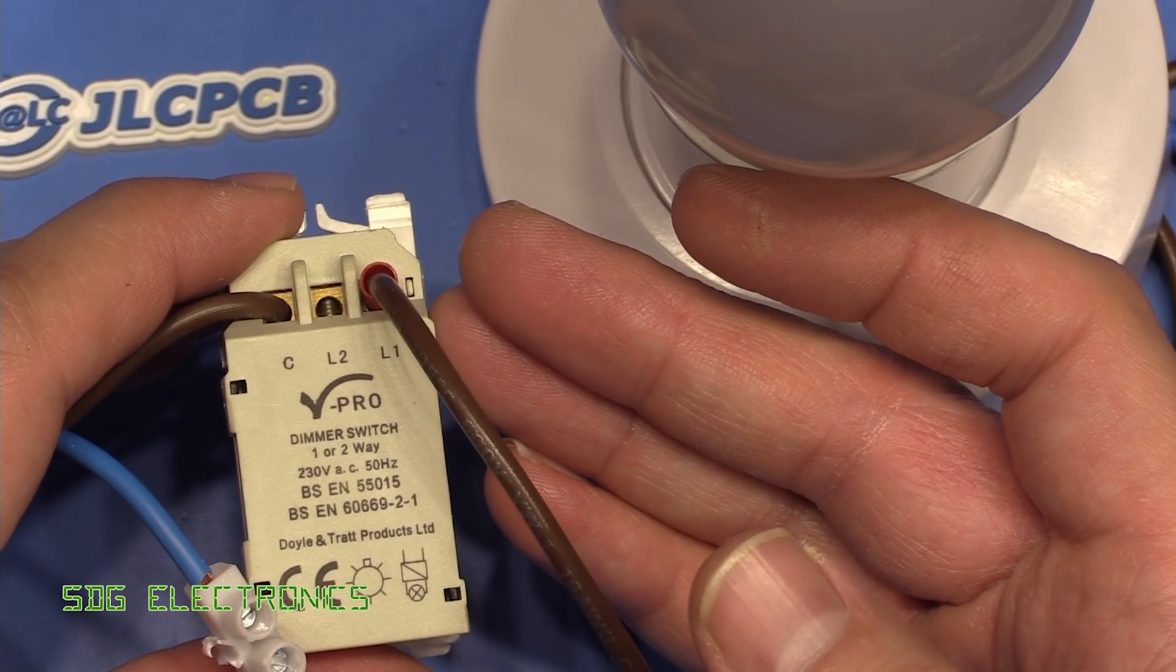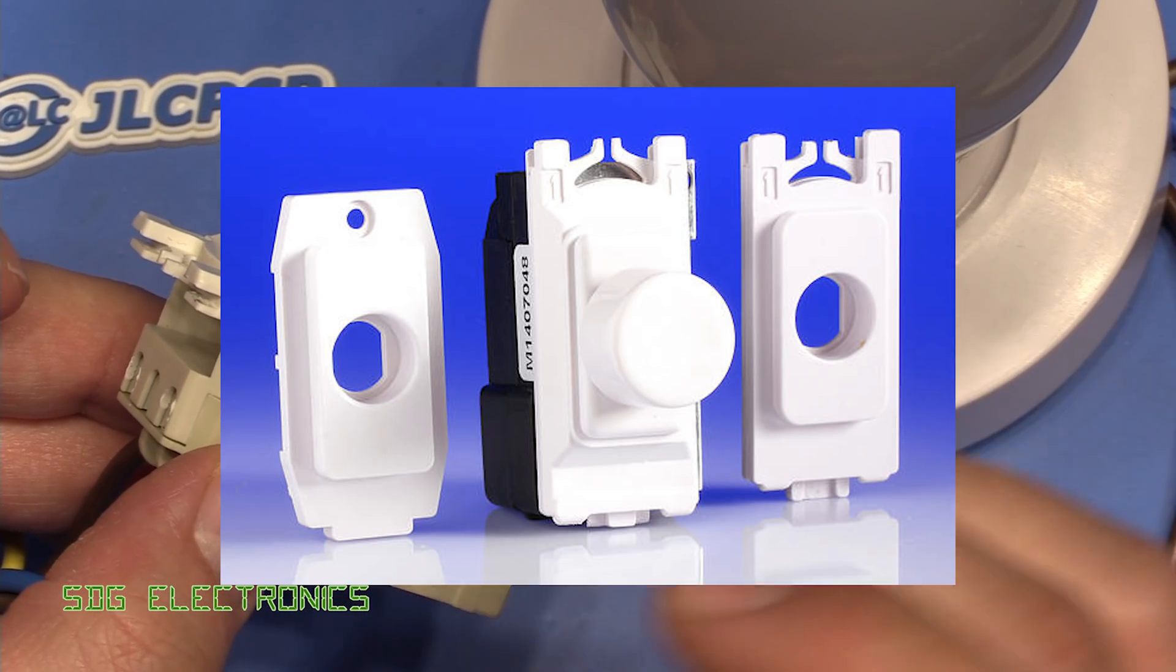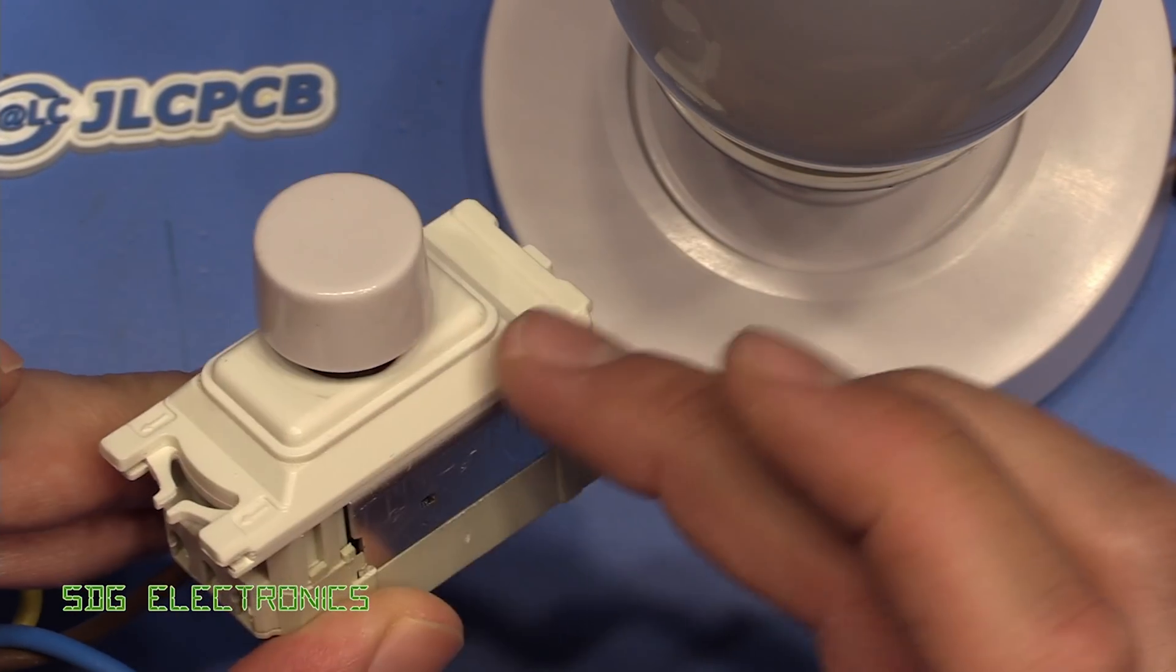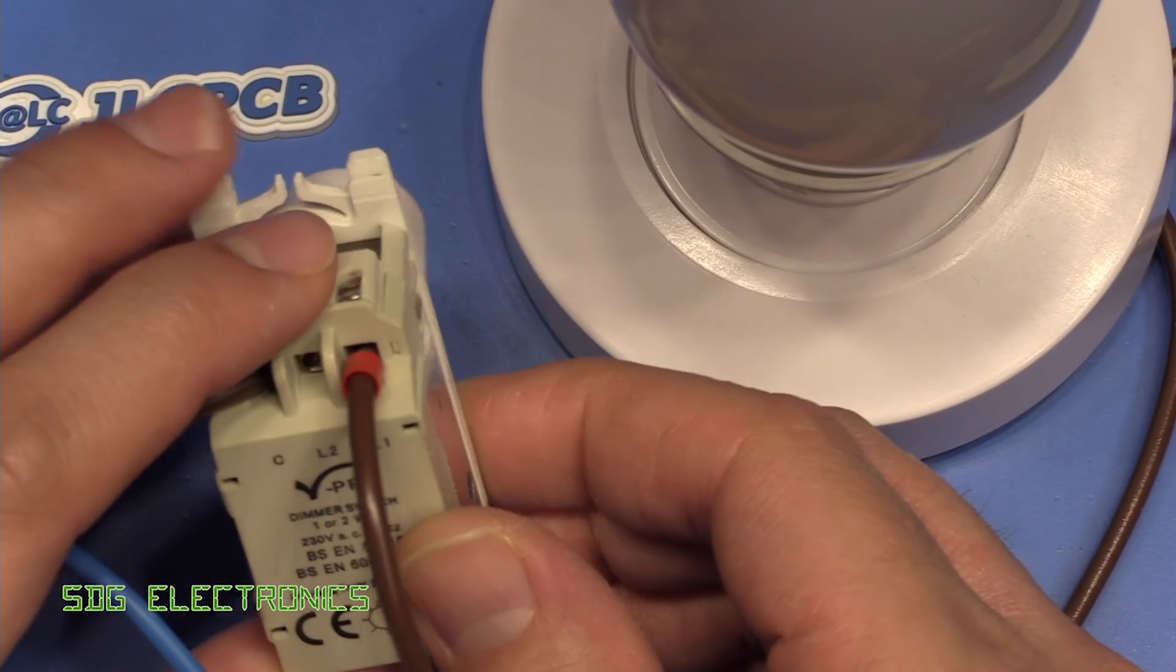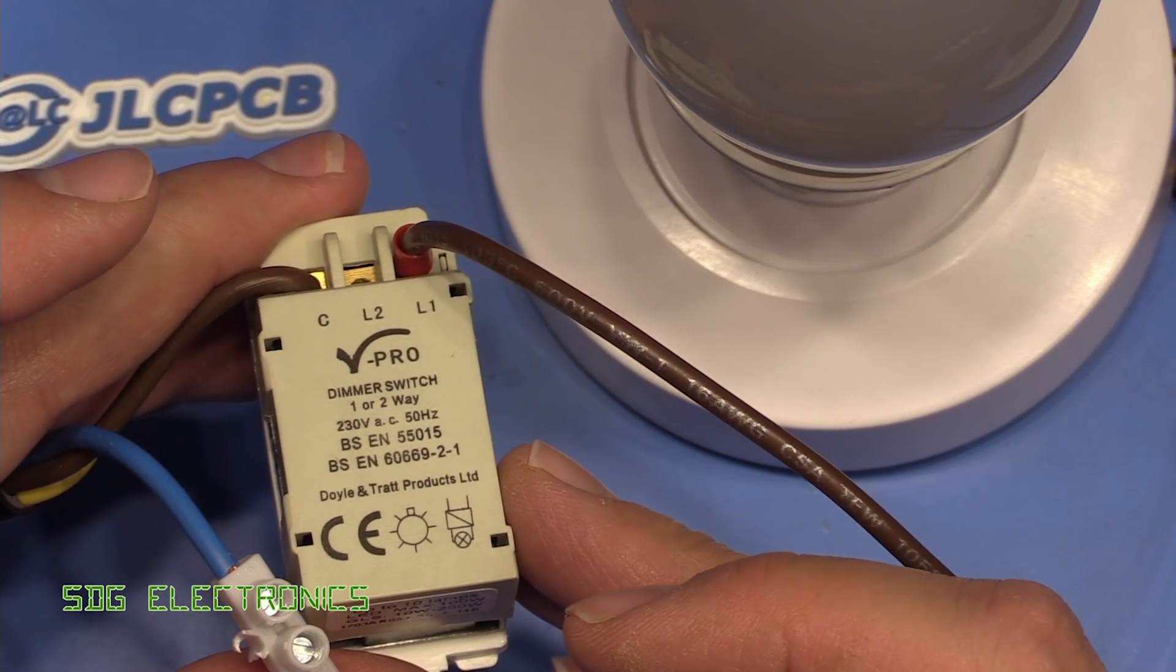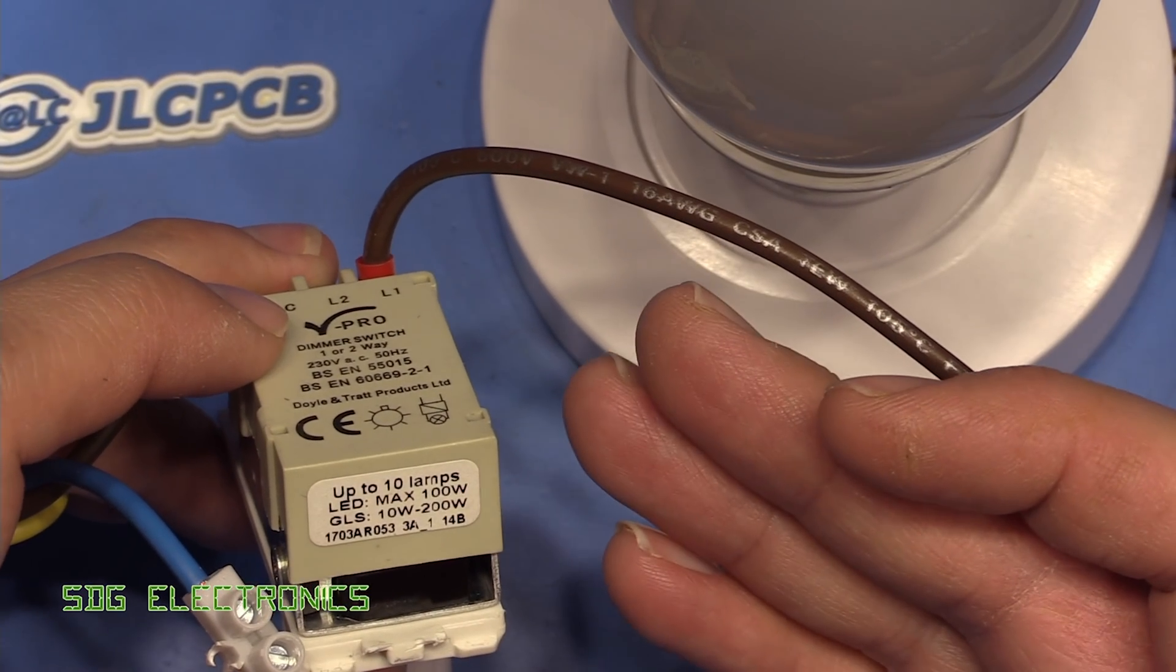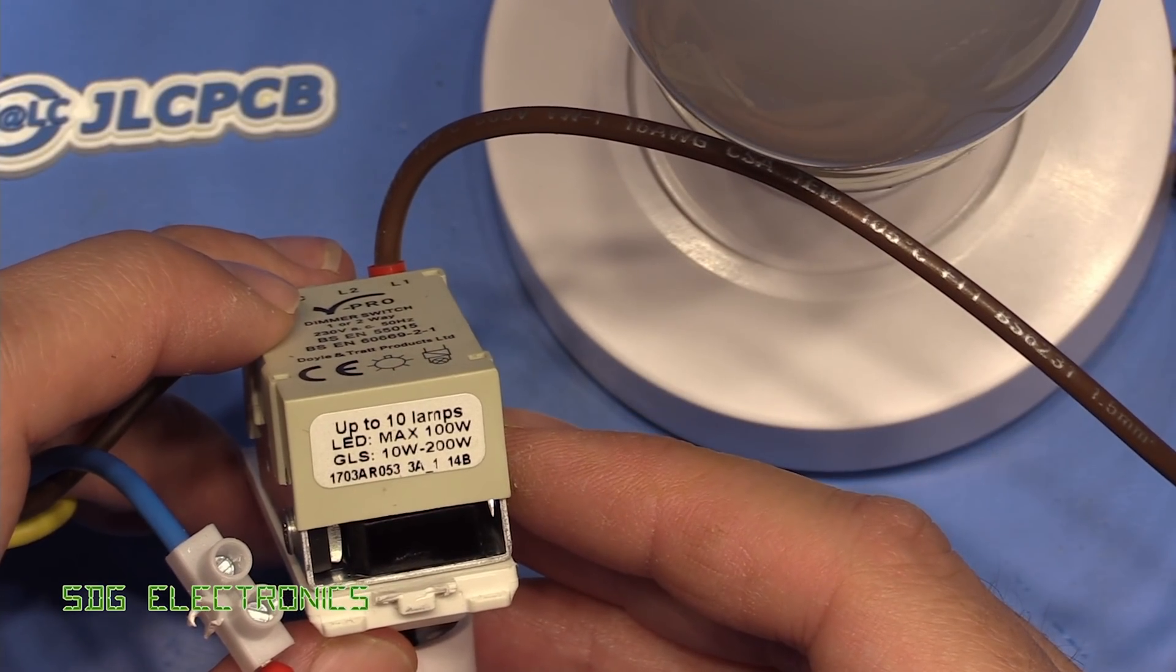So this is a Varilight V-Pro dimmer switch, and it's one of the modules that you can buy to fit into grid modules. This one has the MK Grid little plate here fitted, but it came with a whole range of different types. These Varilight products are normally pretty high quality. I think this was installed about three years ago, and they do have a 10-year warranty, but I have no idea where I bought it from, so I probably wouldn't have the proof of purchase to get it sorted out under warranty.